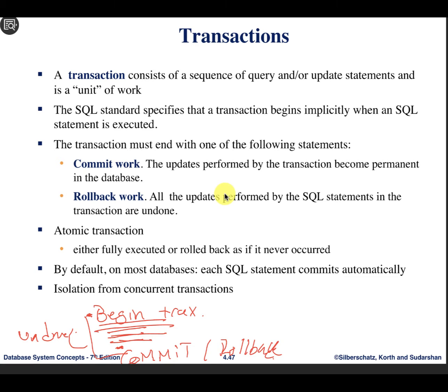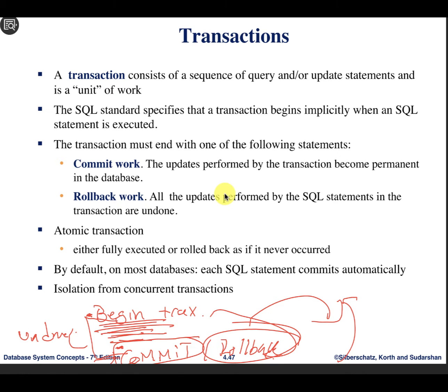When you say ROLLBACK, that means ignore — you are not going to make the changes permanent; they won't be reflected to the disk. If you said BEGIN TRANSACTION, performed many queries, and then said ROLLBACK, it's as if whatever you executed in that transaction never happened. If you say COMMIT, the changes are made permanent.